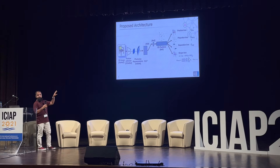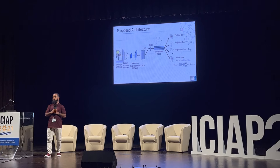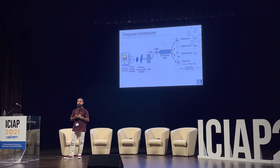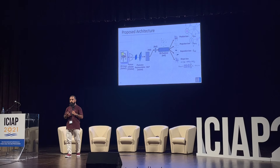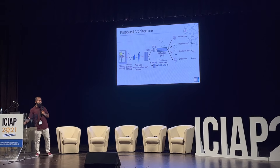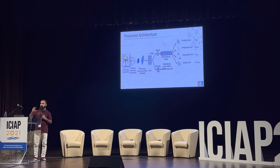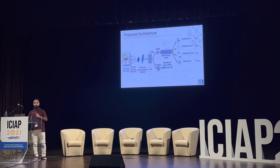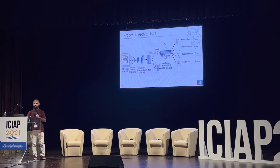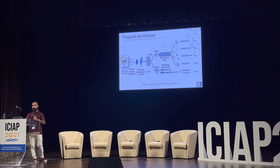Our approach estimates a total set of key points; however, not all key points are valid for every object. For instance, a simple chair can be represented using only 12 key points, while a complex chair may need more. That is why our approach estimates a confidence score for every key point — based on this score, we identify which of the estimated key points are most useful with respect to the structure of the object. We have a confidence loss to train this component.